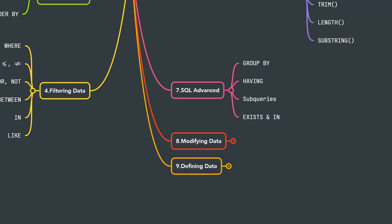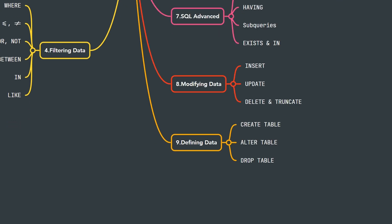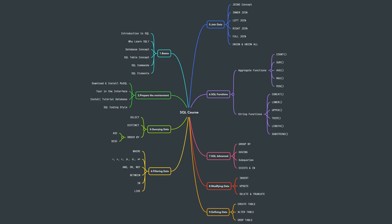In the next chapter, we're going to raise the level again by learning advanced topics in SQL like GROUP BY, HAVING, and subqueries. Then we're going to learn how to modify our data inside our tables using INSERT, UPDATE, and DELETE. In the last chapter of this course, we will learn how to define our data using SQL — like CREATE, ALTER, and DROP tables. Those are all the topics we're going to cover in this SQL course.